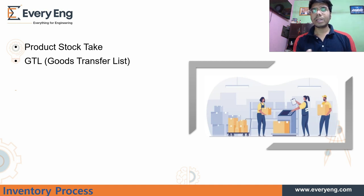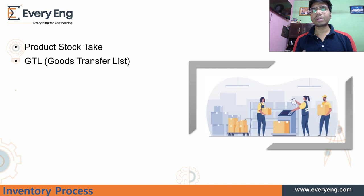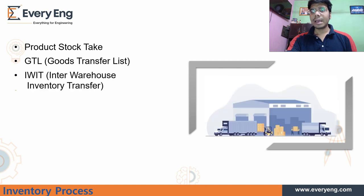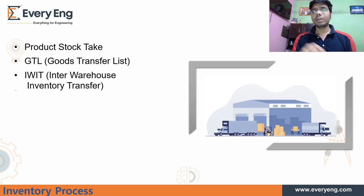The next inventory process is GTL — Goods Transfer List. For example, if 10 TVs are at a particular location, we can move them to another location within the inventory. Movement of a product from one location to another is called GTL. The third inventory process is IWIT — Inter-Warehouse Inventory Transfer. For example, if one warehouse is in Kolkata and another is in Lucknow, we can transfer stock from one warehouse to the other.